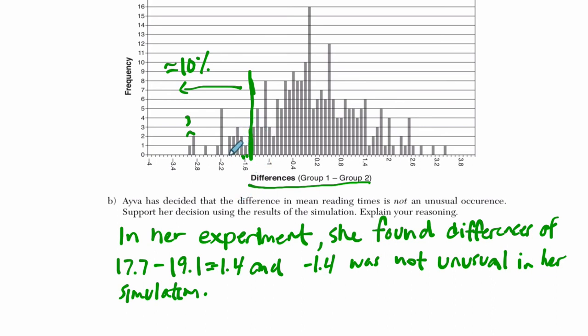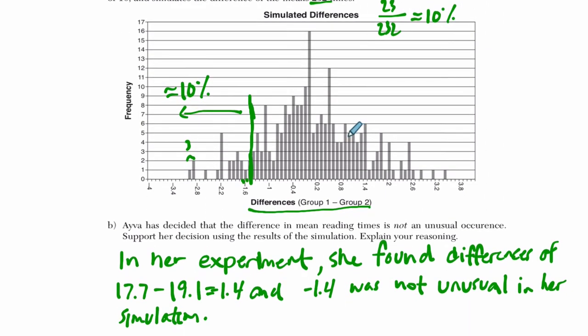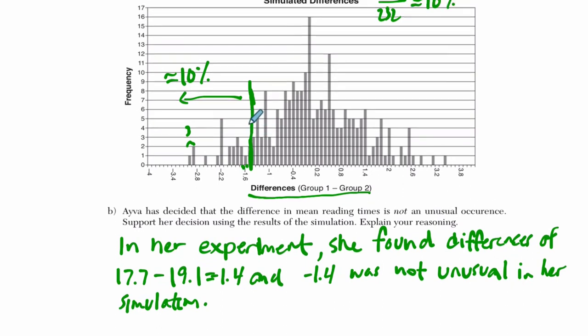And what we're showing is that the differences of negative 1.4 or less, right, or smaller numbers, right, so if you had, let's say 20 or 21, those things are happening about 10% of the time. So you could expect just by randomly shuffling all these numbers around and simulating it, that you can get a difference of negative 1.4, negative 1.5, negative 1.6, about 10% of the time, just from randomly moving them around. It's not unheard of. So it's not that unusual that you can get a difference of negative 1.4. You can see it popping up in this graph.